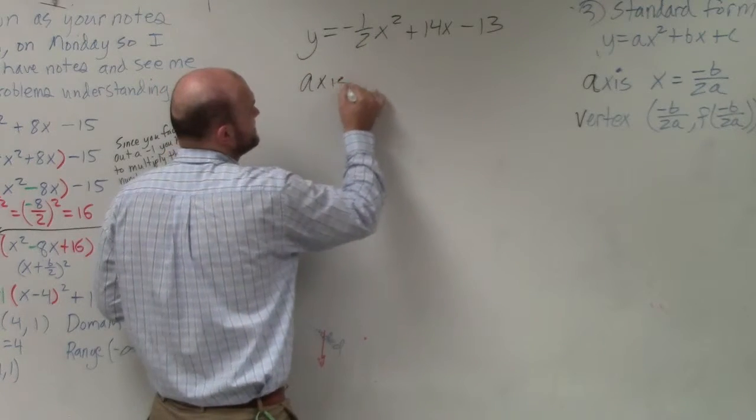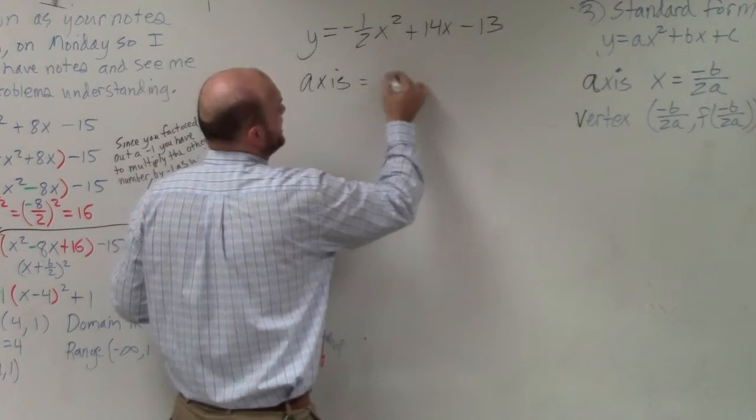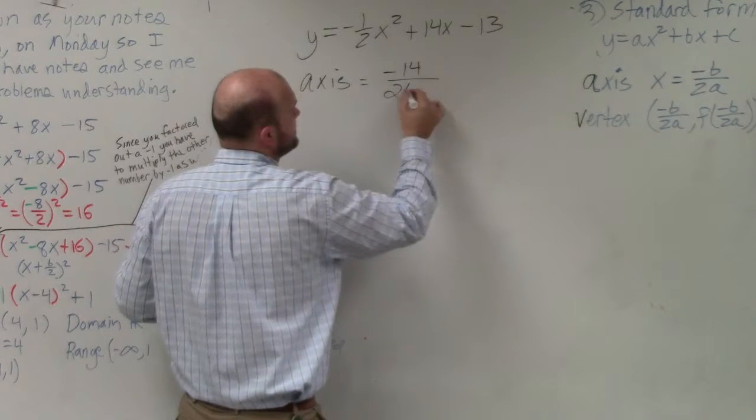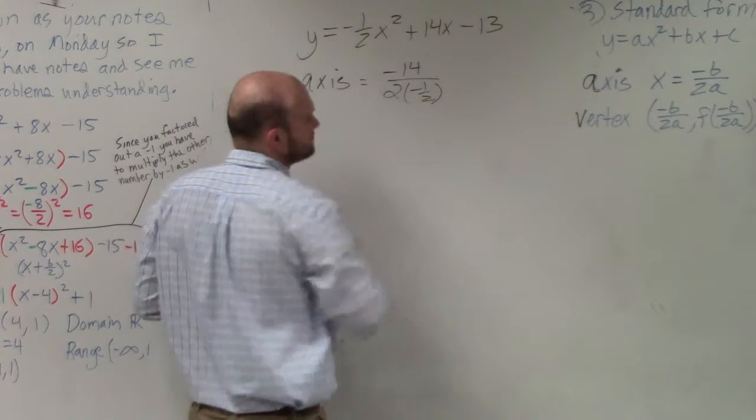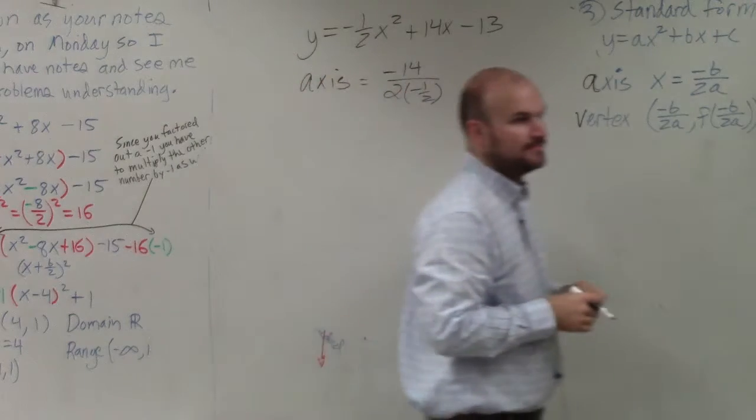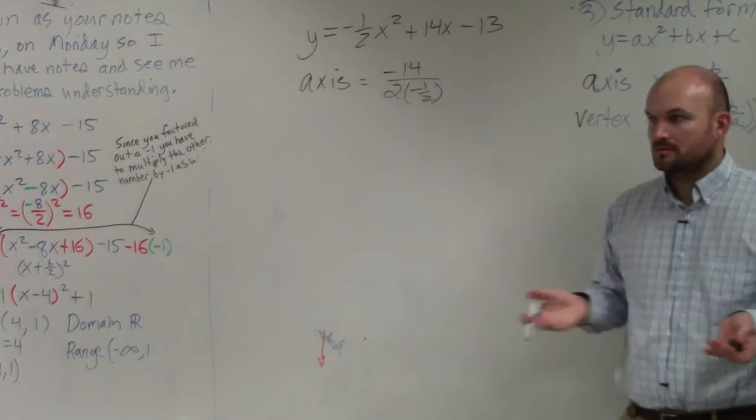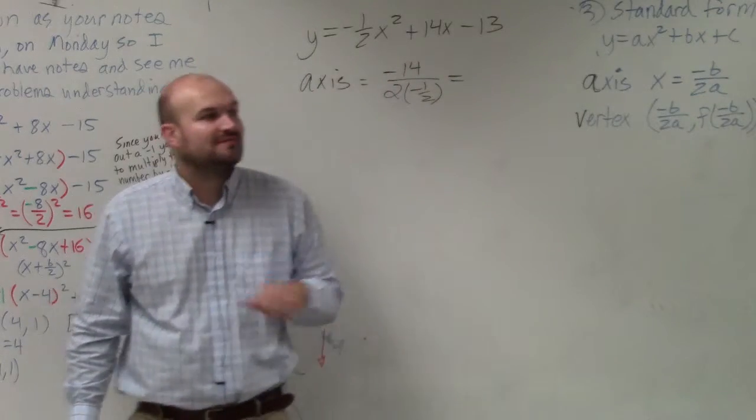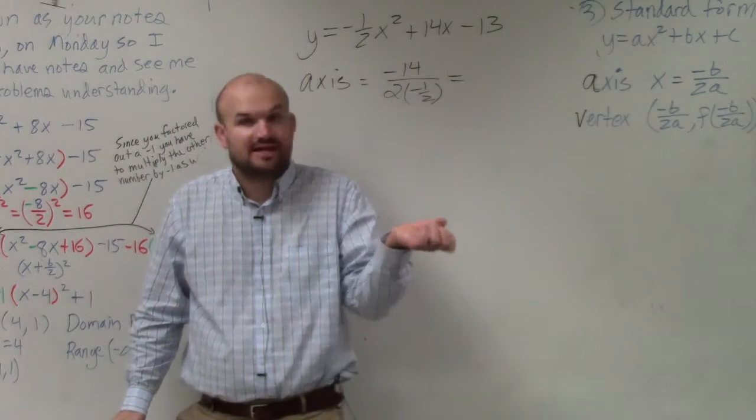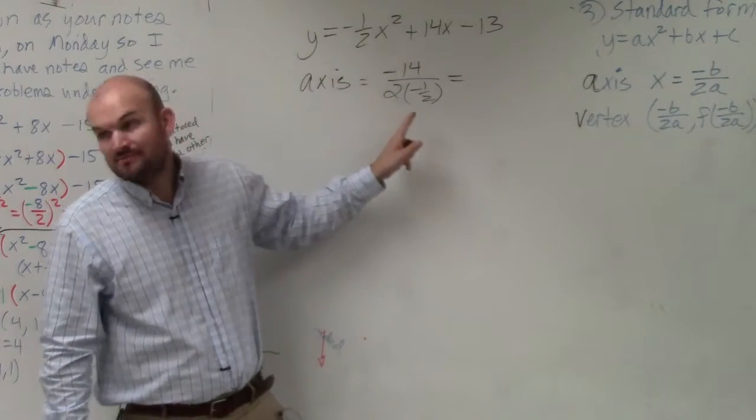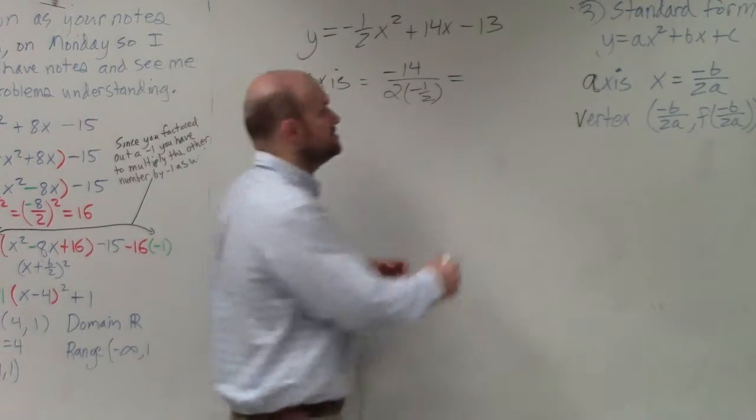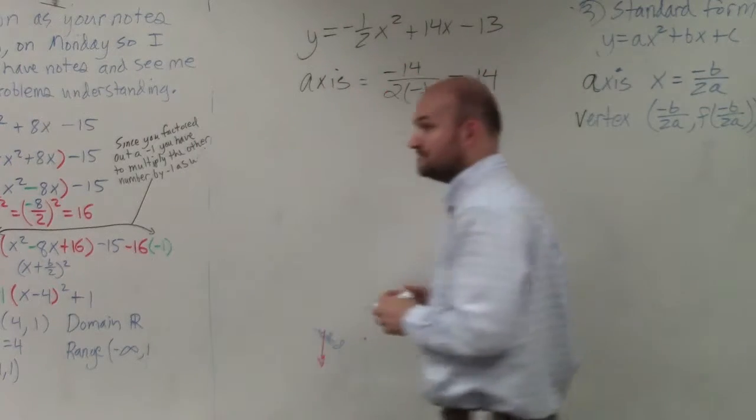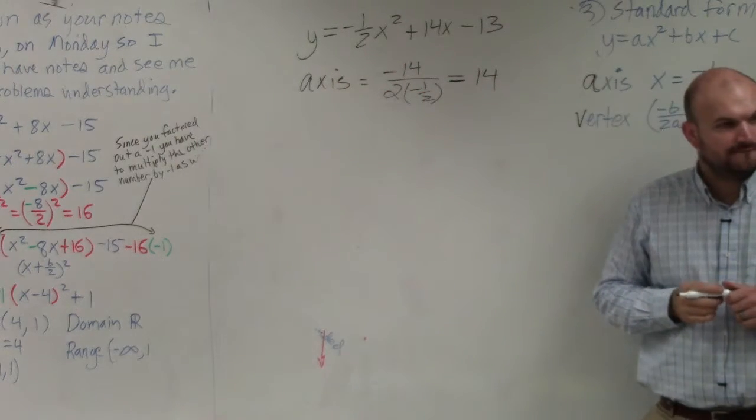So if I just wanted to find the axis of symmetry, I would just take opposite of 14 divided by 2 times negative 1 half. And that's it. So when I go ahead and plug this in, 2 times negative 1 half is going to be negative 1. Negative 14 divided by negative 1 is going to be positive 14. Right? Yes?